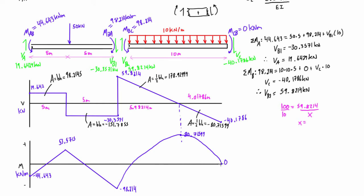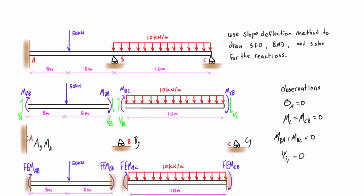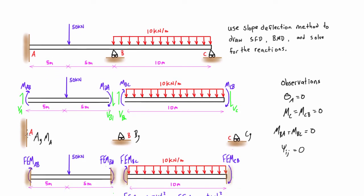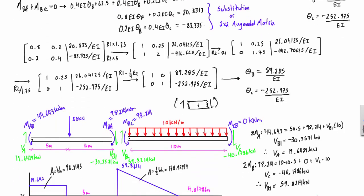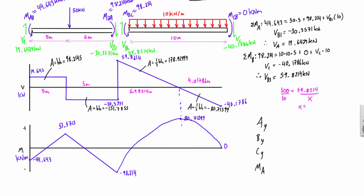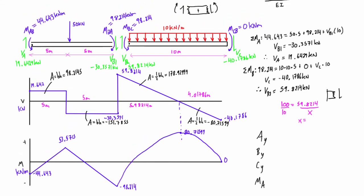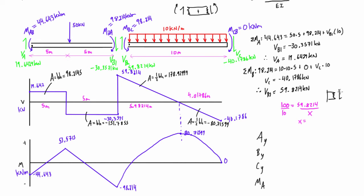Now let's talk about the reactions. We have Ay, By, Cy, and Ma. Going back to the original drawing, we have a vertical reaction and a moment at the fixed end, and just vertical reactions at the roller points. Looking at point A first — we have positive shear, so the shear is going down to the right of the virtual cut. Using our sign convention, that means the reaction has to be going up at that point.